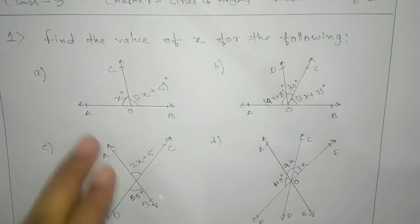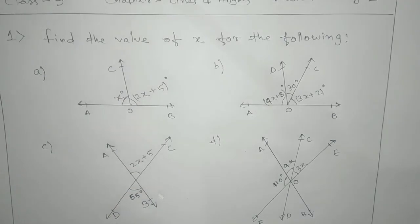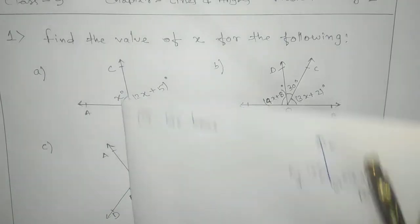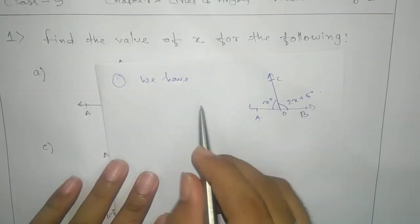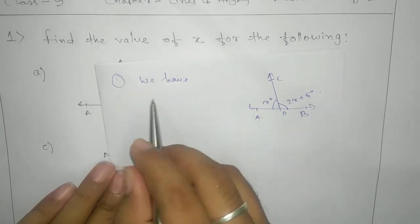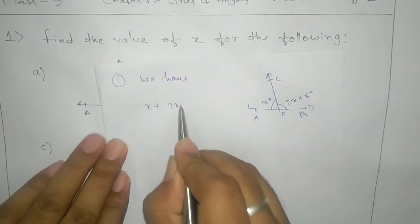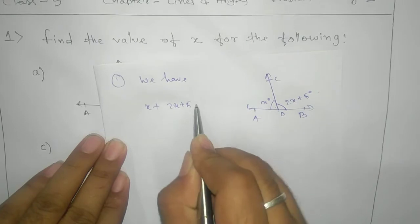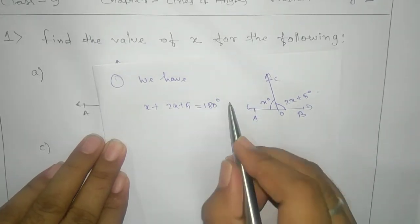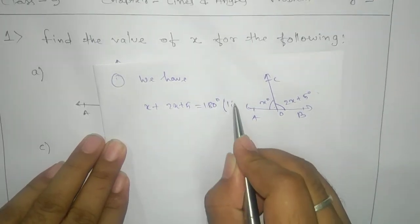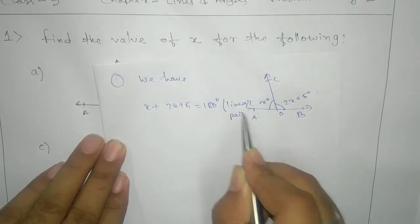Here you can see that EOB is a straight line and there are two angles. So in this case we are going to write: X plus 2X plus 5 equals to 180. Beside this we write the reason: linear pair.